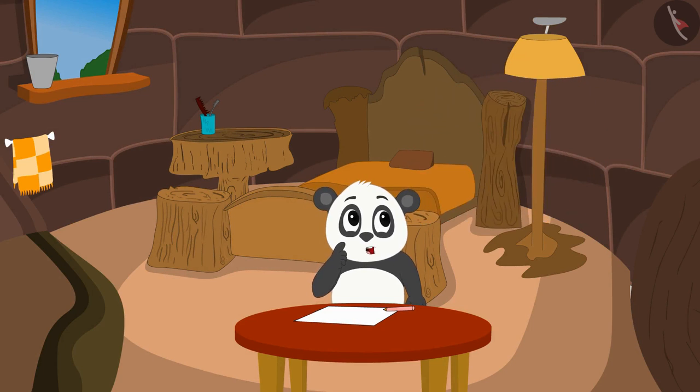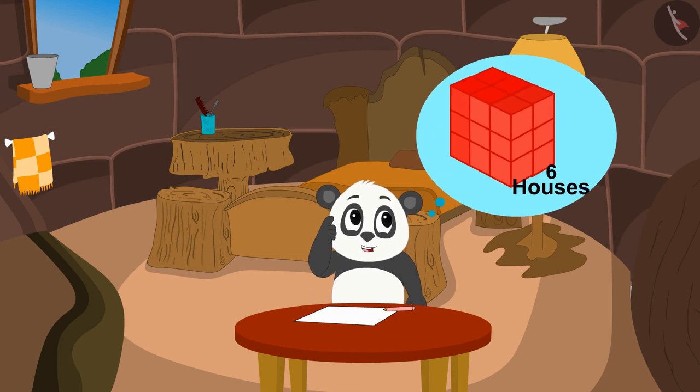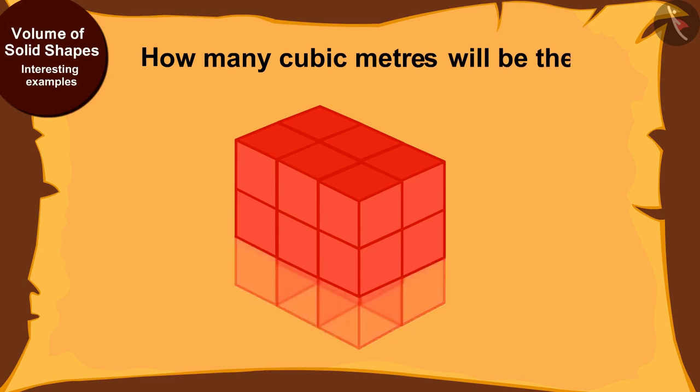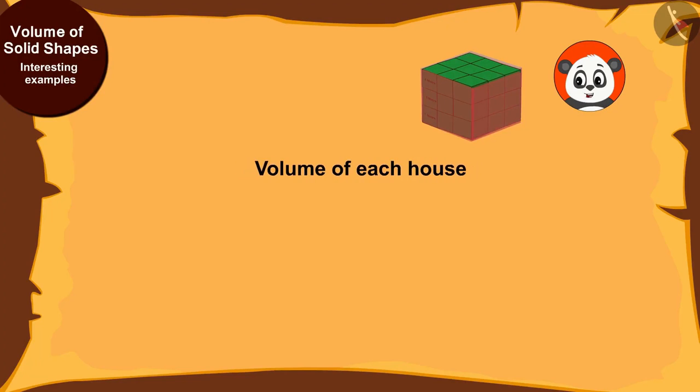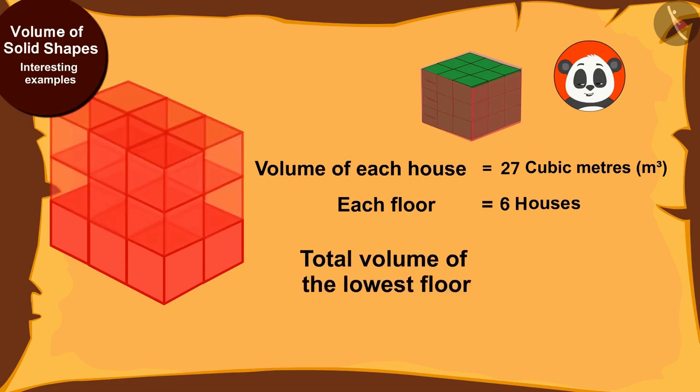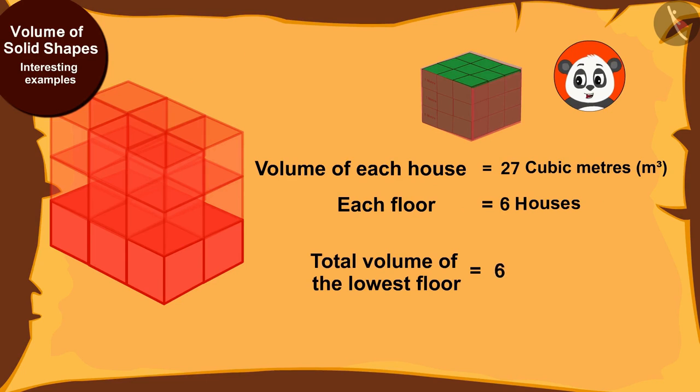If I build 6 houses on each floor of the building, how many cubic meters will be the total volume of the lowest floor? The volume of each house is equal to 27 cubic meters, and there are 6 such houses on each floor. This will mean the total volume of the lowest floor will be 6 times 27, that is, 162 cubic meters.